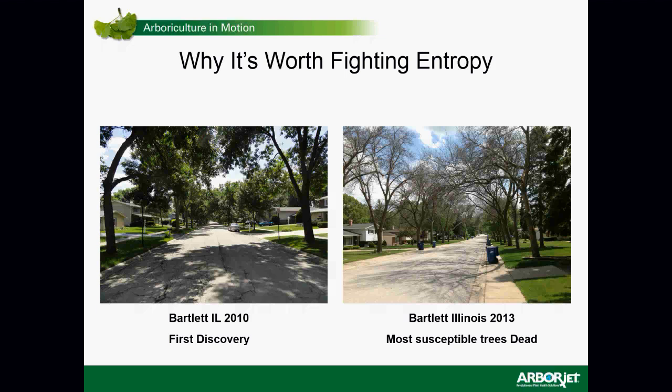This is Bartlett, Illinois, in 2010. I was there, talking to the city council about what was coming. They had the highest number of ash per city of its size — about 38% ash in their city — and EAB was first discovered there in 2010. Just three years later, most of the susceptible trees were dead. The only trees that survived were on a street where a private citizen activist convinced their neighbors to spend the money to treat the trees themselves. All the others — all 38% of the canopy — are dead.